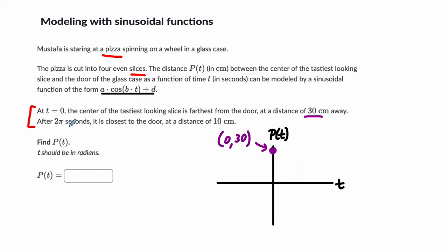And after two pi seconds, it is closest to the door at a distance of 10 centimeters. So that I can plot a second point. I can say at two pi seconds, I don't know where to put that. So I'll just say here, this is two pi seconds. And at that point, it is 10 centimeters from the door.